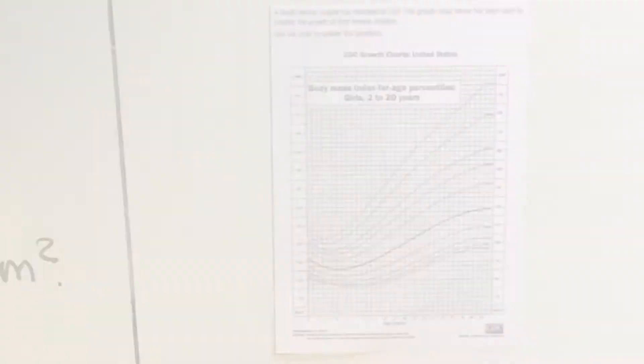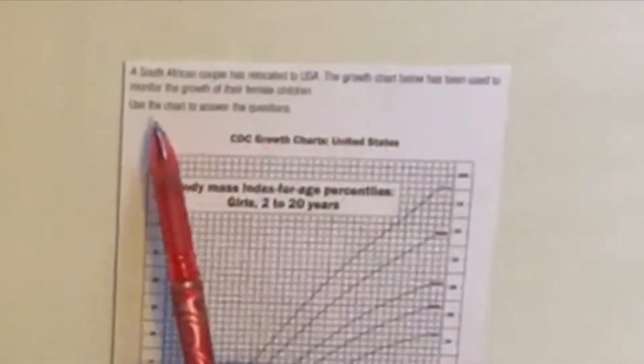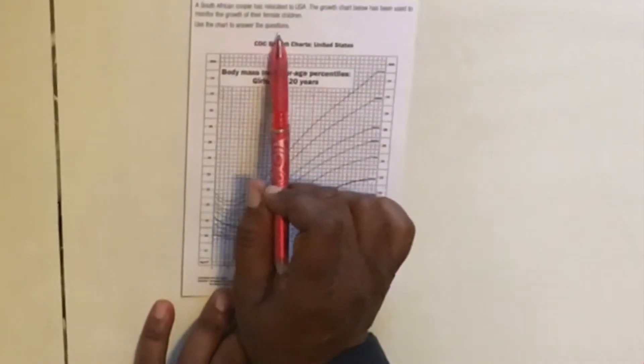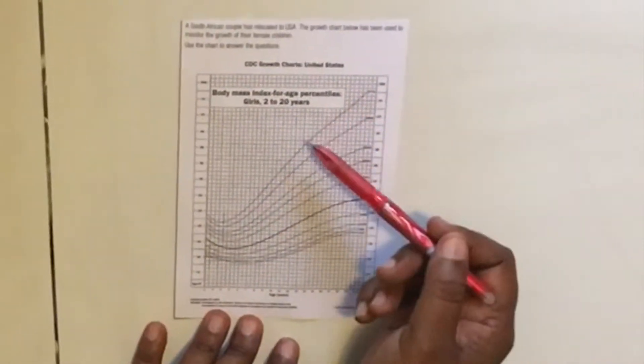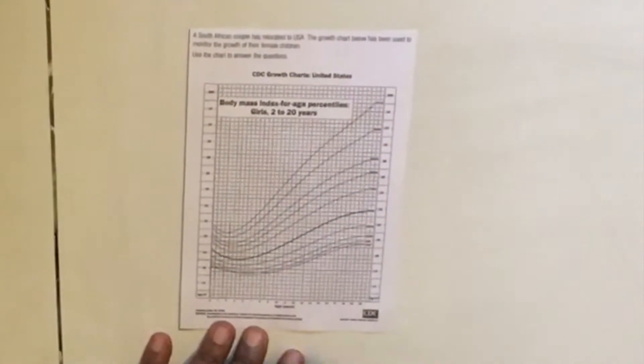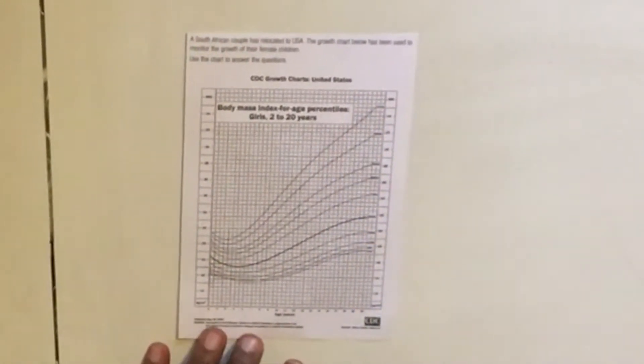Now let's look at a particular question and how we use the chart. They say a South African couple has relocated to USA. The growth chart below has been used to monitor the growth of their female children. Use the chart to answer the question. You remember when I was explaining, I said usually it would be a different chart for boys and girls because boys and girls grow differently. So this one is for girls.